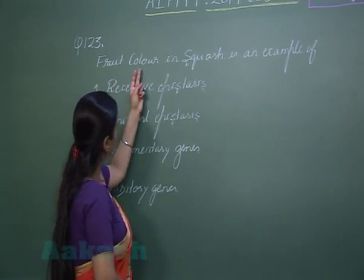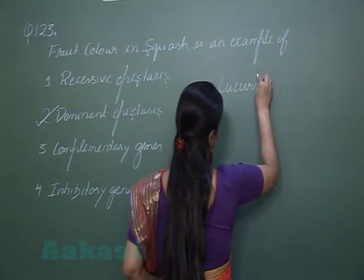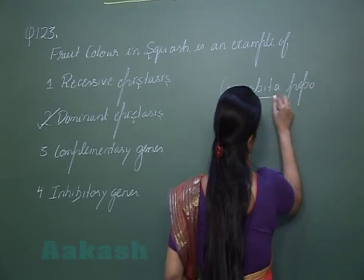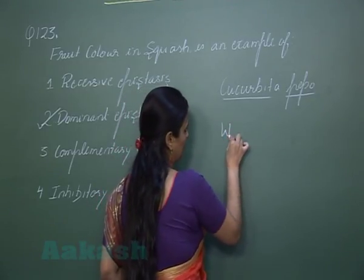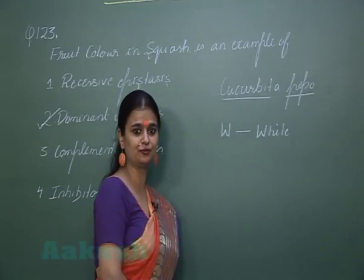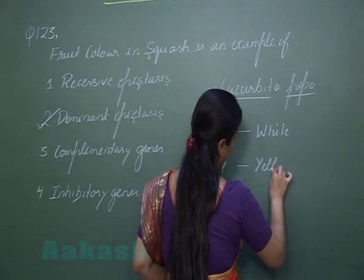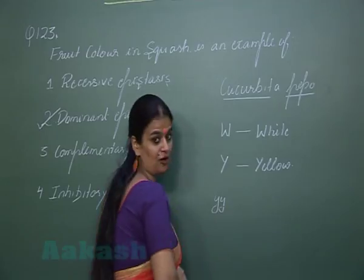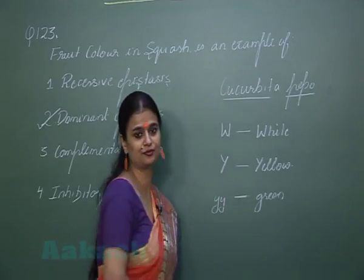Fruit color in summer squash, scientific name Cucurbita pepo, is controlled by two genes. The dominant W gene is responsible for white color of the fruit. The dominant Y gene is responsible for yellow color, and if the Y gene is present in recessive form, it is responsible for green color of the fruit.